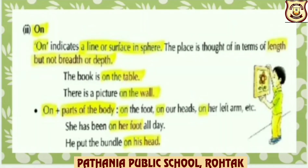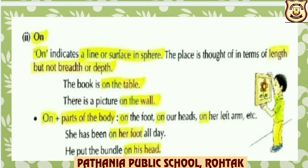Let us discuss where to use 'on'. On indicates a line or surface. The place is thought of in terms of length, but not breadth or depth. For example: The book is on the table. Next, on plus parts of the body, such as on the foot, on her head, on her left arm, etc. For example: She has been on her feet all day. Here you can see, children, preposition 'on' and parts of the body — her foot.